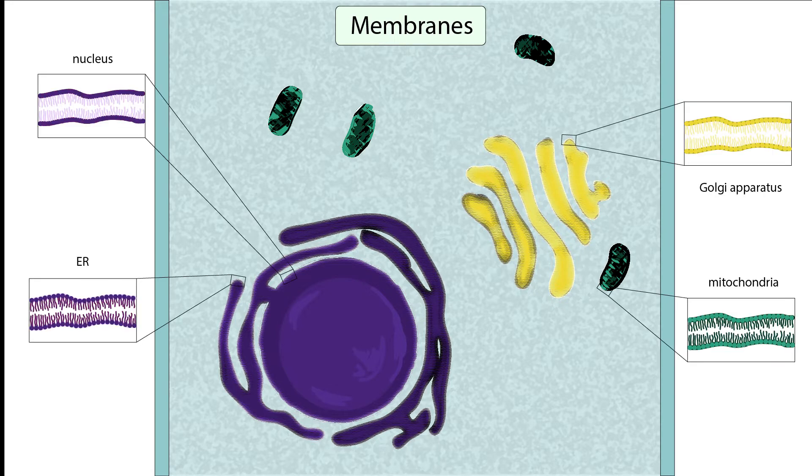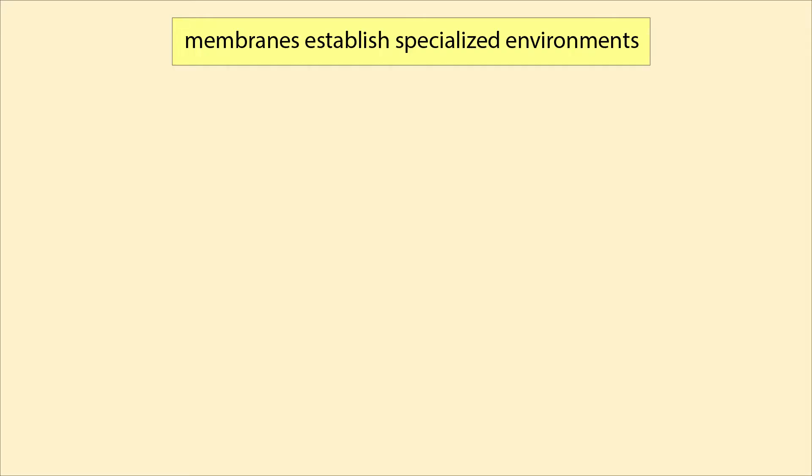the nucleus, the ER, and the Golgi apparatus. This separation allows specialized environments to be maintained within various parts of the cell to ensure that cell processes occur in the proper location and order.